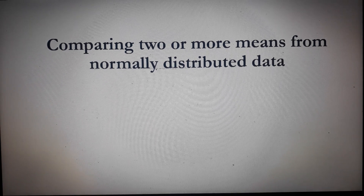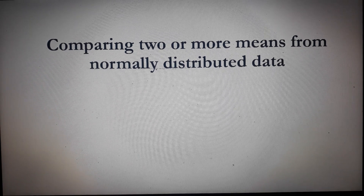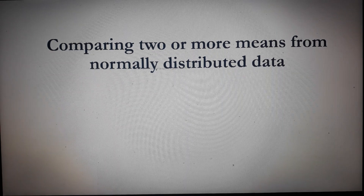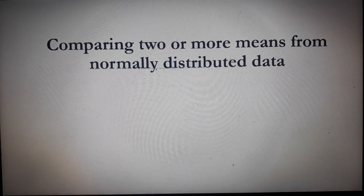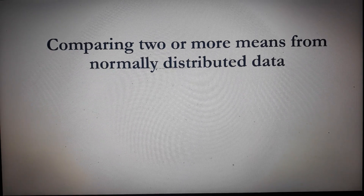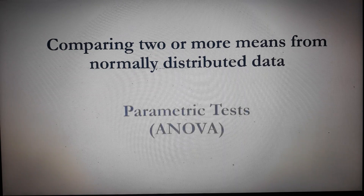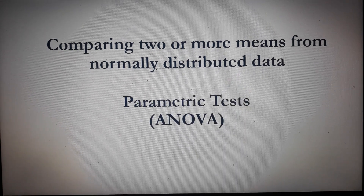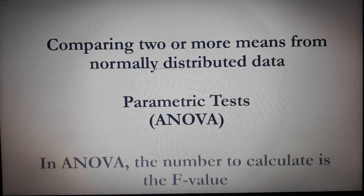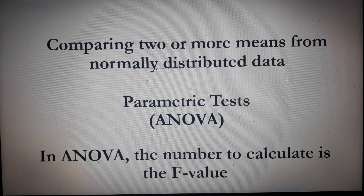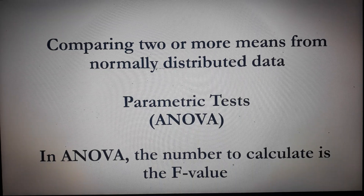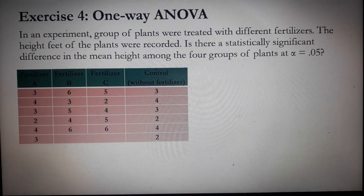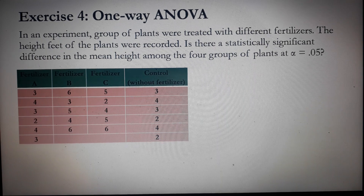We are going to apply the next statistical treatment: comparing two or more means from normally distributed data using ANOVA, or the analysis of variance. In ANOVA, the number to calculate is the F value. Let's proceed right away to the exercises.